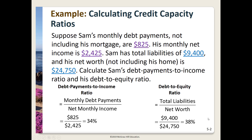Recall that your debt to equity ratio should be less than one. If your debt roughly equals your net worth, you've probably reached the upper limit of your debt obligations. This 38 percent, written as a decimal, is 0.38, which is less than one — so Sam is within acceptable range.